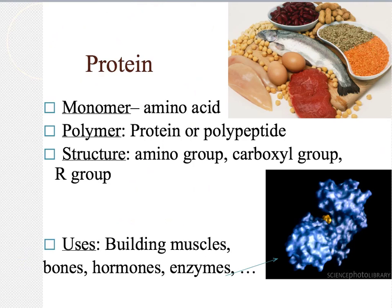Our next macromolecule, and probably the most important one, is protein. The monomer of protein would be an amino acid. The polymer, or the large molecules, are called proteins or polypeptides. There is an amino group, a carboxyl group, and an R group in the structure. We use proteins to build muscles, to build bones — all of our hormones, enzymes, and most of the molecules in our body are made of protein. That image to the right is a 3D rendering of an enzyme in our body that helps us digest sugars.